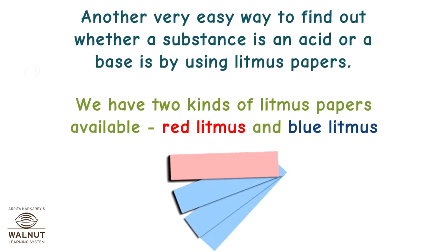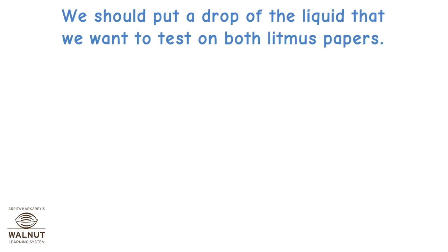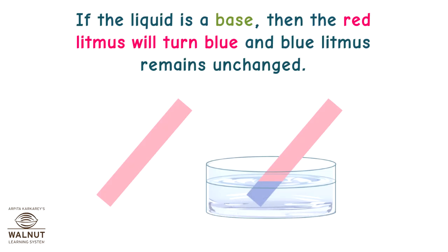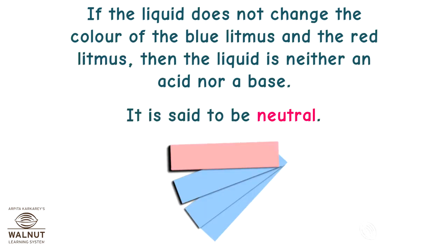Another very easy way to find out whether a substance is an acid or a base is by using litmus papers. We have two kinds of litmus papers available: red litmus and blue litmus. We should put a drop of the liquid that we want to test on both litmus papers. If the liquid is an acid, then the blue litmus will turn red and the red litmus remains unchanged. If the liquid does not change the colour of the blue litmus and the red litmus, then the liquid is neither an acid nor a base — it is said to be neutral.